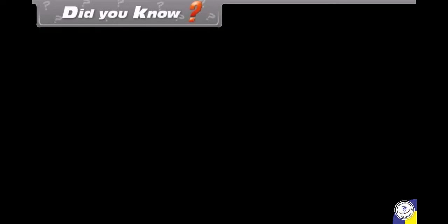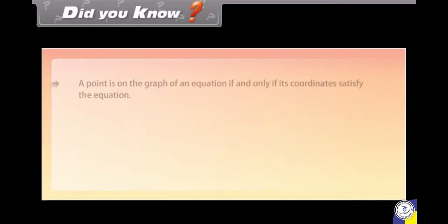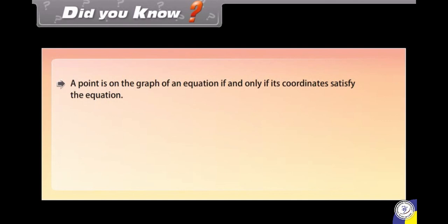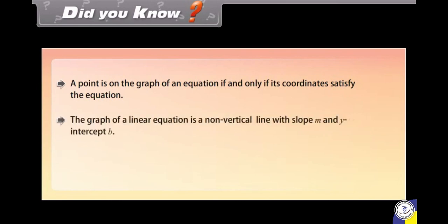Did you know? A point is on the graph of an equation if and only if its coordinates satisfy the equation. The graph of a linear equation is a non-vertical line with slope m and y-intercept b.